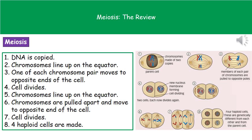The difference from mitosis is that there is a second division — the DNA does not replicate again at this point. The chromosomes line up on the equator once more, are pulled apart, and move to opposite ends of the cell. The cell then divides again, and what we end up with are four haploid cells. To recap: DNA replication, chromosomes line up and one of each pair moves to opposite ends giving two identical copies, then chromosomes line up again and are pulled so half go to each end, and the cell divides again leaving four haploid cells.